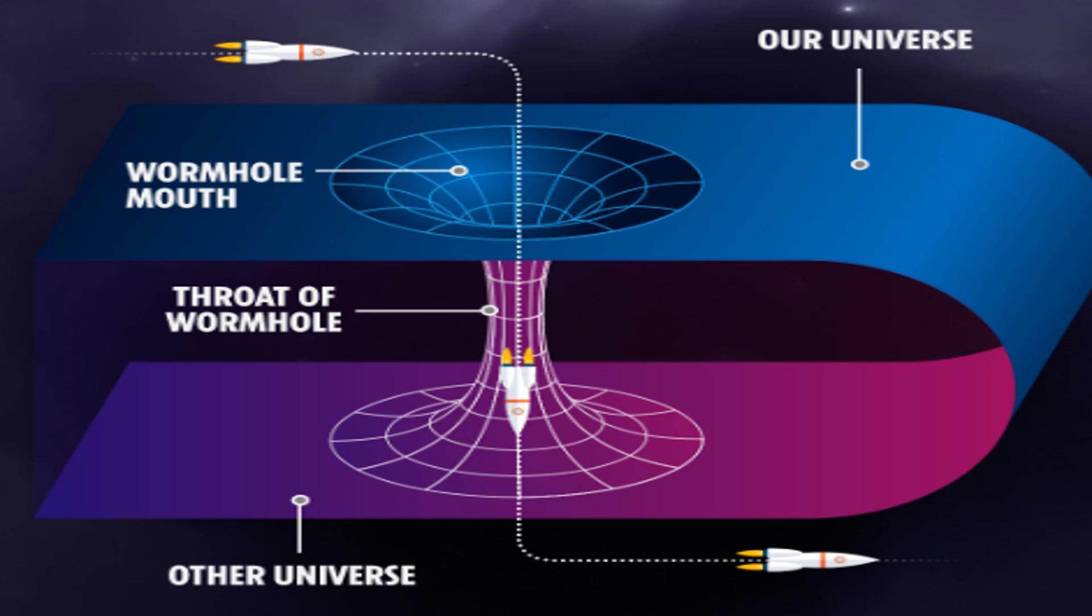For a wormhole to be traversable by humans or spacecraft, it needs to be stable and large enough to allow passage. Theoretical physicist Kip Thorne and his colleagues explored the possibility of stable, traversable wormholes in 1988. They concluded that maintaining a wormhole's open throat would require exotic matter with negative energy density, a substance that would counteract the natural tendency of the wormhole to collapse. Exotic matter isn't known to exist naturally, but certain quantum effects, like the Casimir effect, suggest that negative energy densities can occur in minute or small amounts.